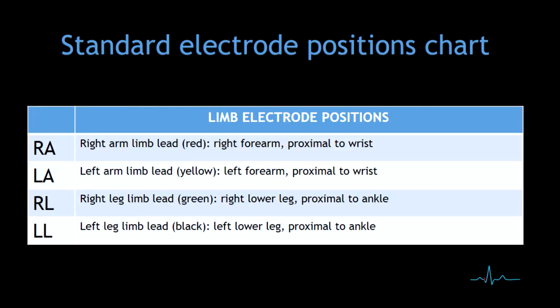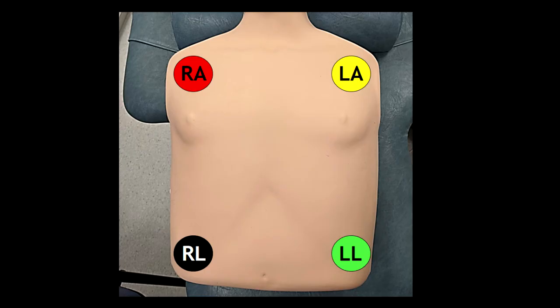Now in this chart you can visualize the limb electrode positions. These electrodes are placed on the patient's arms and legs. And here you can have an idea on how to place the electrodes on the different limbs.